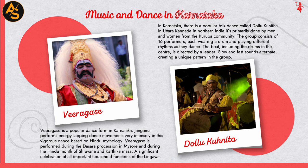Dolu Kunita is a popular folk dance in Karnataka, primarily performed by men and women from the Kuruba community in Uttara Kannada in northern Karnataka. The group consists of 16 performers, each wearing a drum and playing different rhythms as they dance. The beats are directed by a leader, with slow and fast sounds alternating to create a unique pattern.